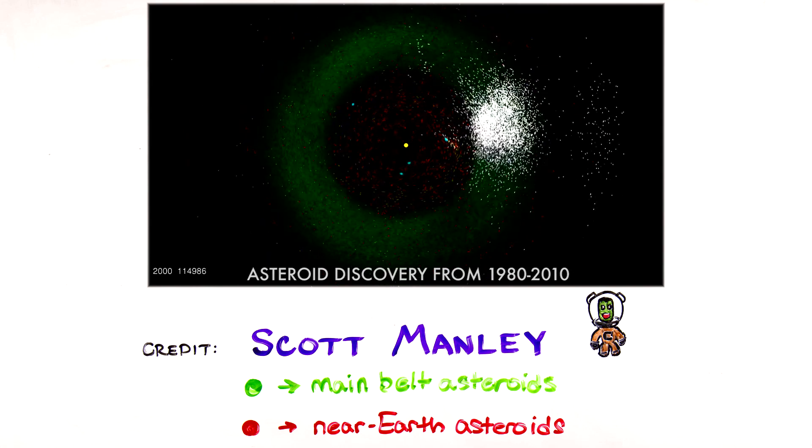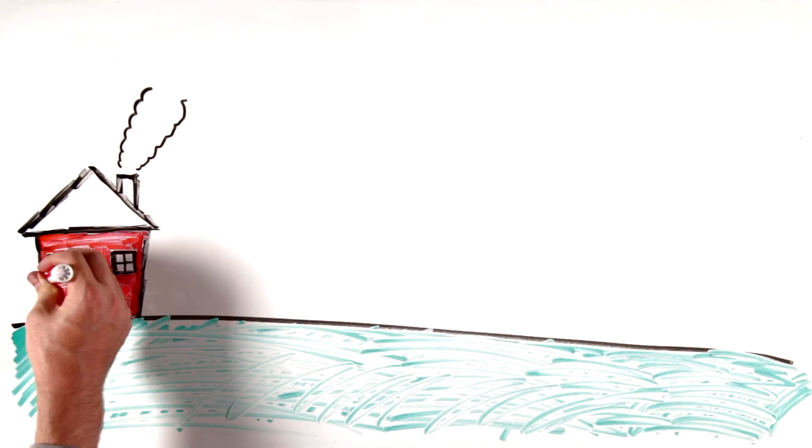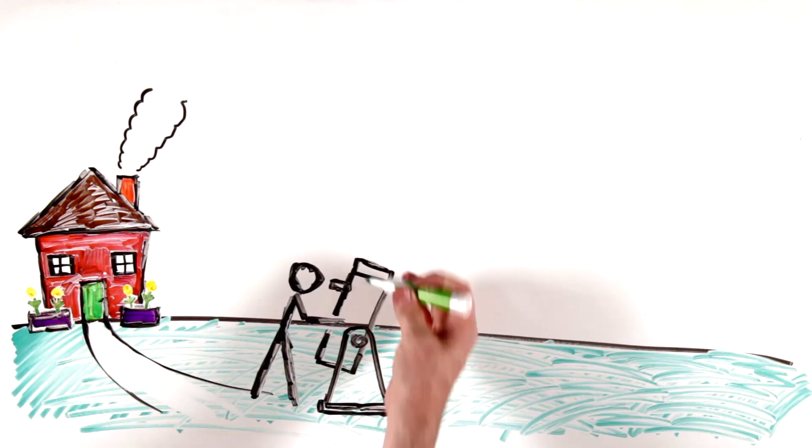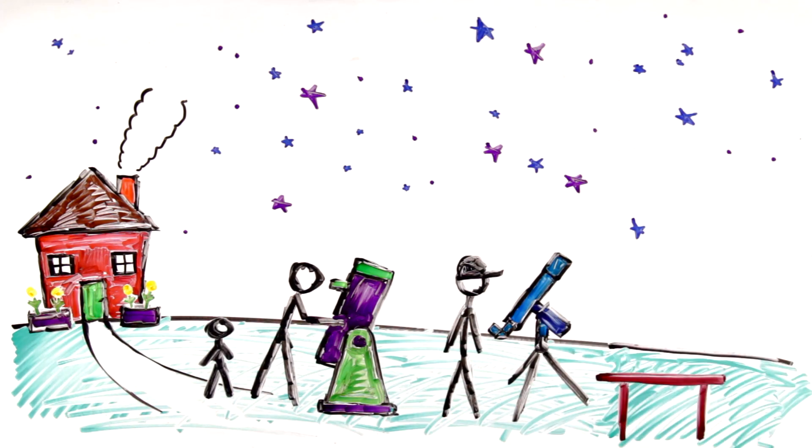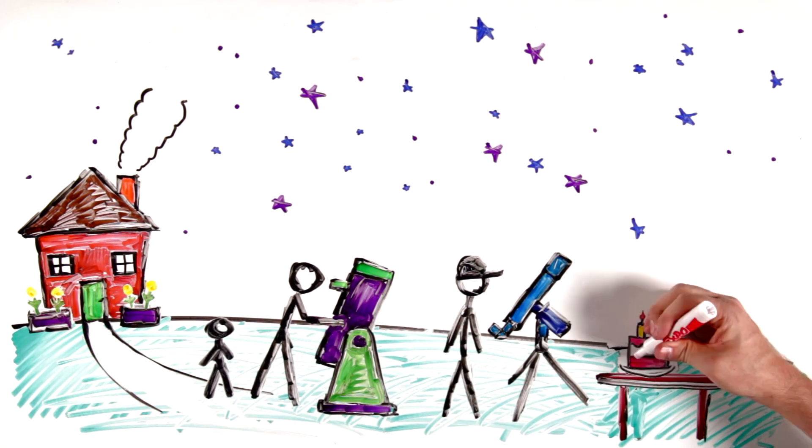The large surveys make most of the discoveries. Amateur astronomers still make new discoveries of asteroids too. But the really significant contribution they make is in follow-up orbit determination and observing characteristics of asteroids.